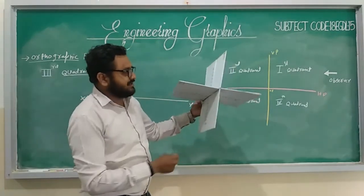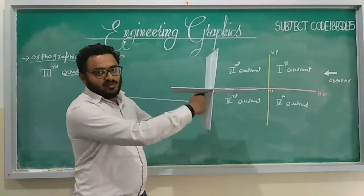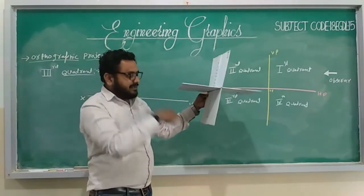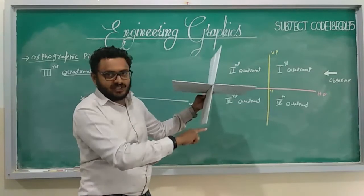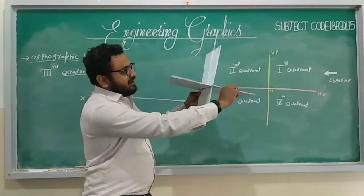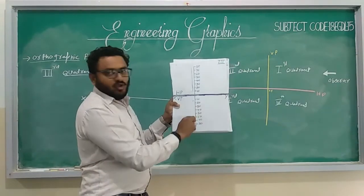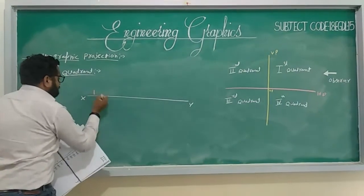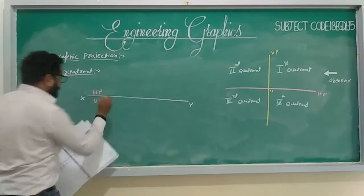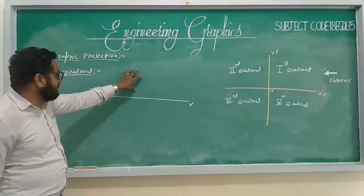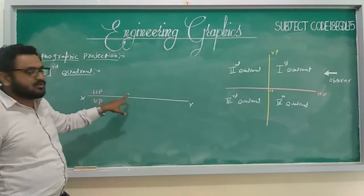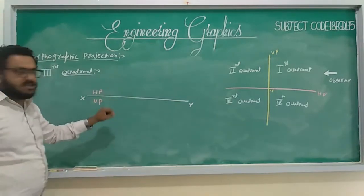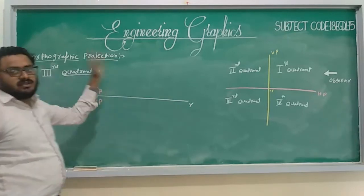Now we will discuss the third quadrant. Concentrate only on the third quadrant. We rotate in the same clockwise direction. VP is on the downside and horizontal plane is here. When you rotate clockwise, VP will come below the XY line and HP will go above the XY line. So the top view comes above the XY line and the front view comes below the XY line. This is exactly opposite to the first quadrant — in the first quadrant VP is upside and HP is downside, but in the third quadrant VP is downside and HP is upside.